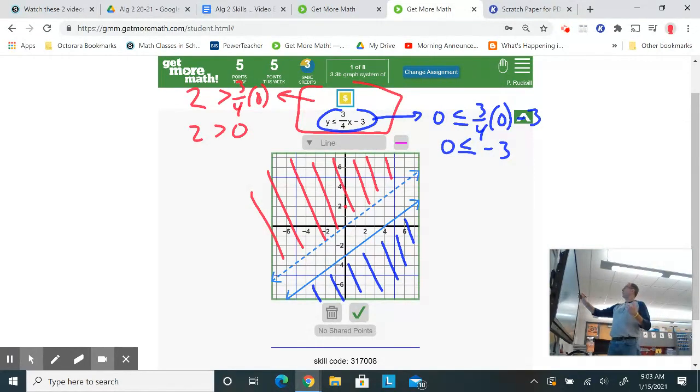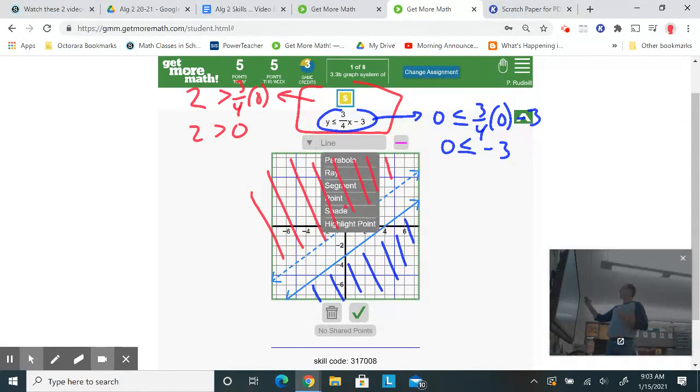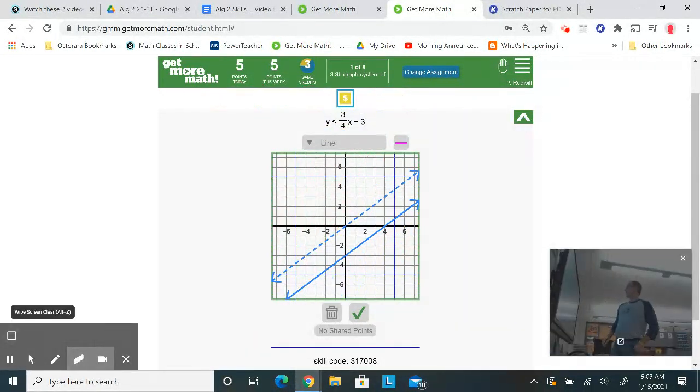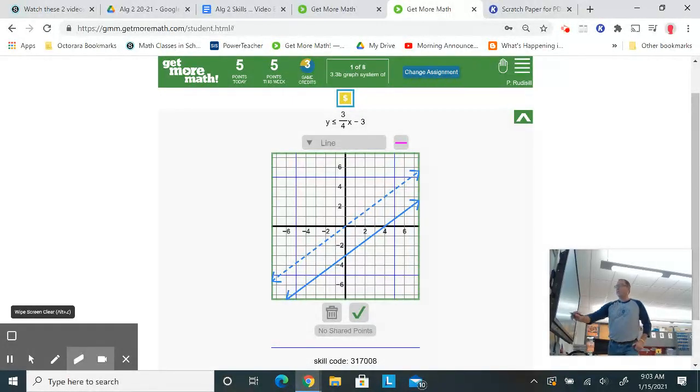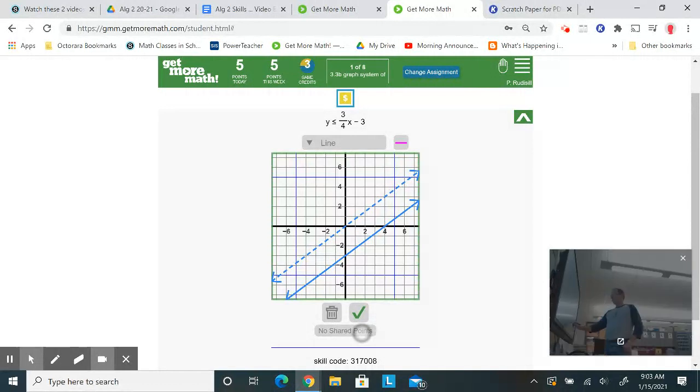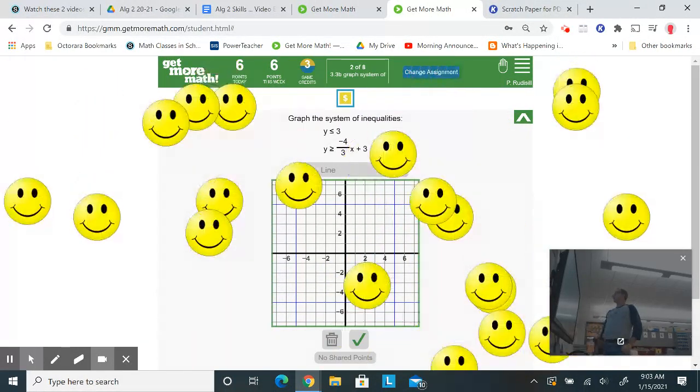I don't want to shade anywhere because I'm going to get rid of all that work I did on top of my graph there. And I know there's no ordered pairs that work for both. So definitely, you want to go down here and you want to tap on no shared points. So I do that. And it worked.